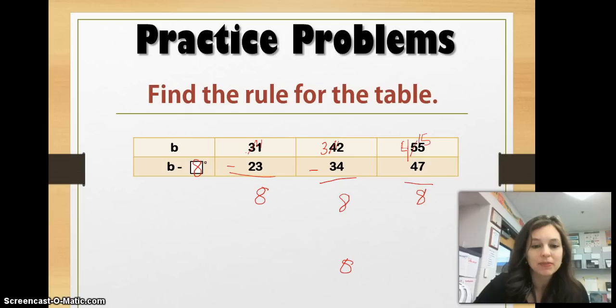So, it looks like B minus 8 is my rule. Is that what you got? If so, great job. If not, go back and see where you made your mistake and make your corrections and let's move on.